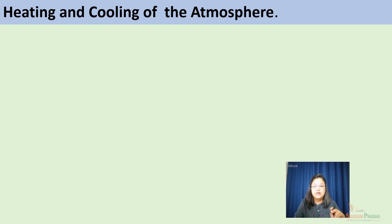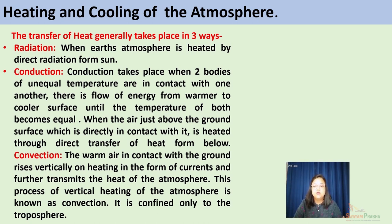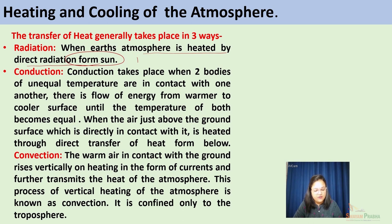The Earth constantly strives to maintain the heat balance between incoming solar radiation and outgoing terrestrial radiation, which is also called the heat budget of Earth. The transfer of heat takes place in three ways. First is radiation, when the earth's atmosphere is heated by direct radiation from the sun — absorbing approximately 14% of incoming solar radiation, which heats up the atmosphere. This is called radiation.